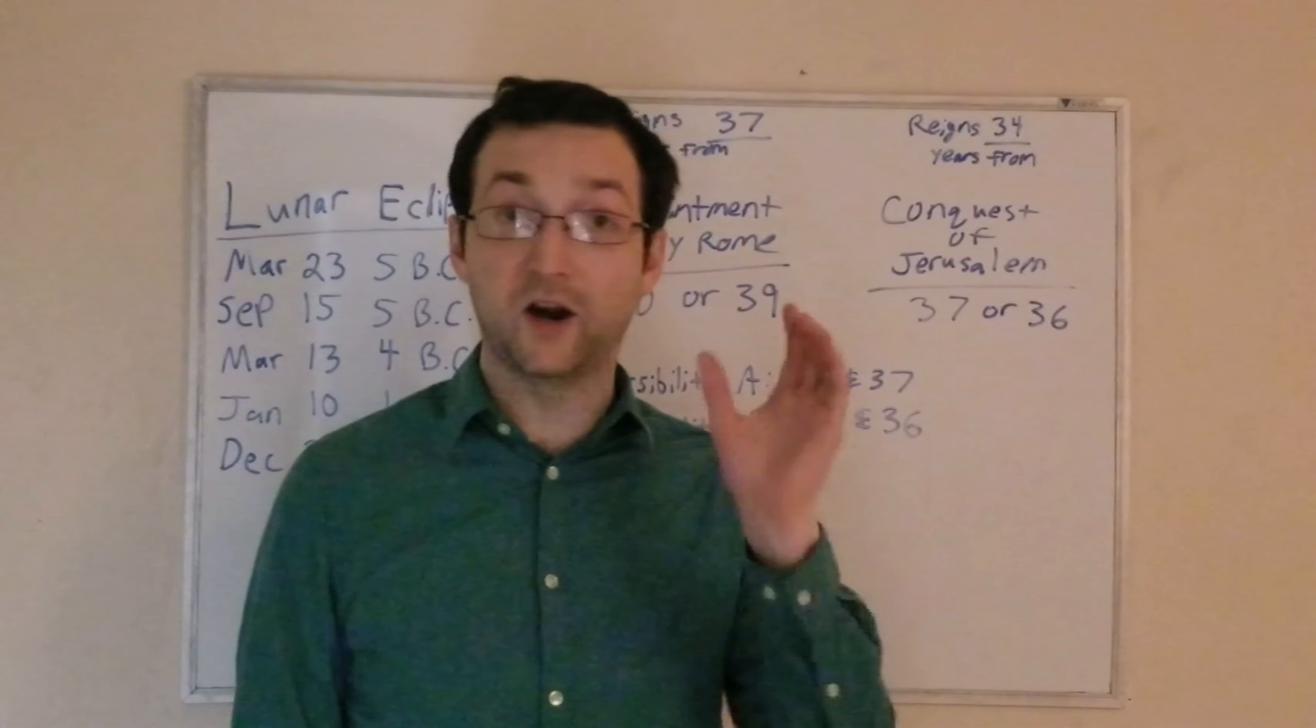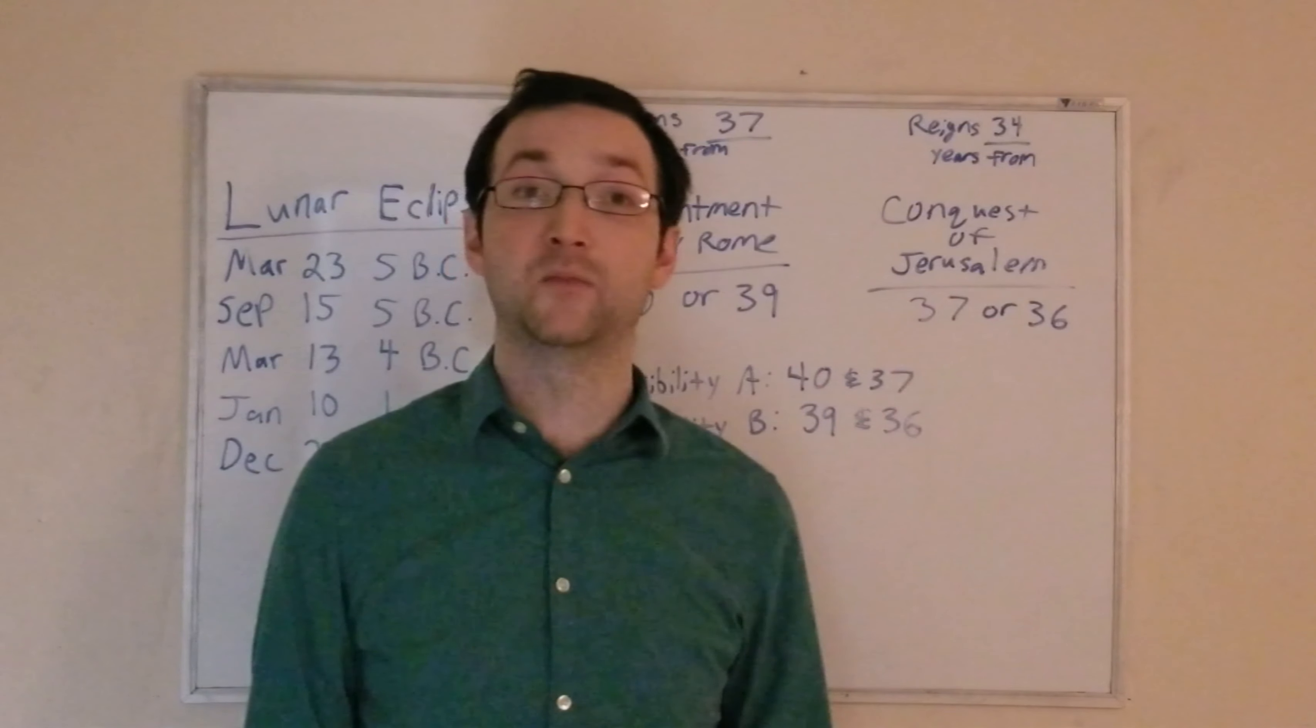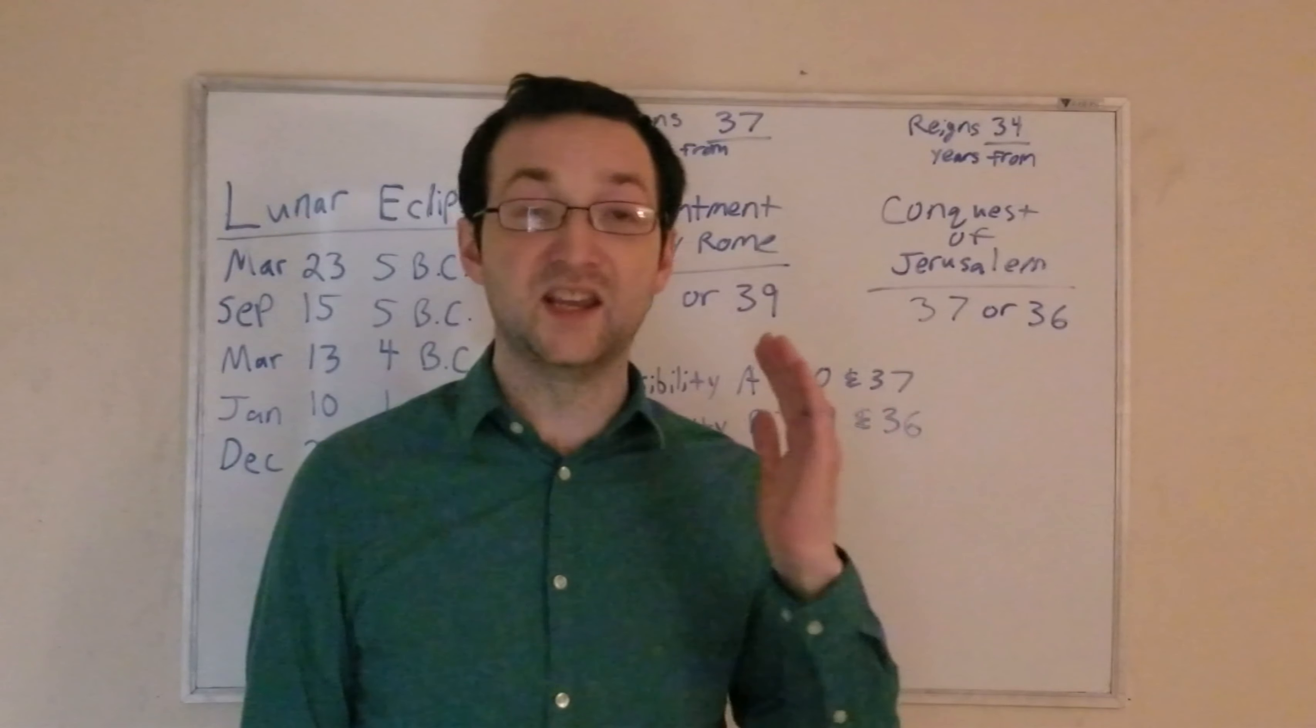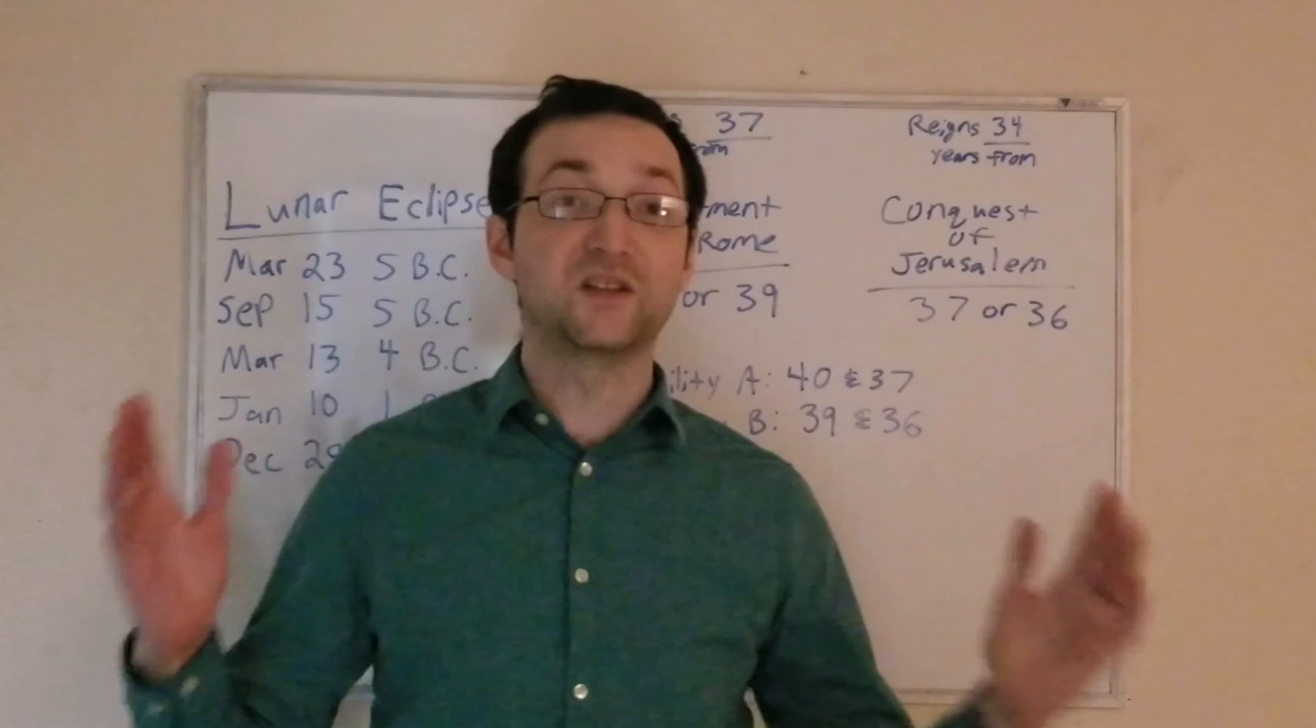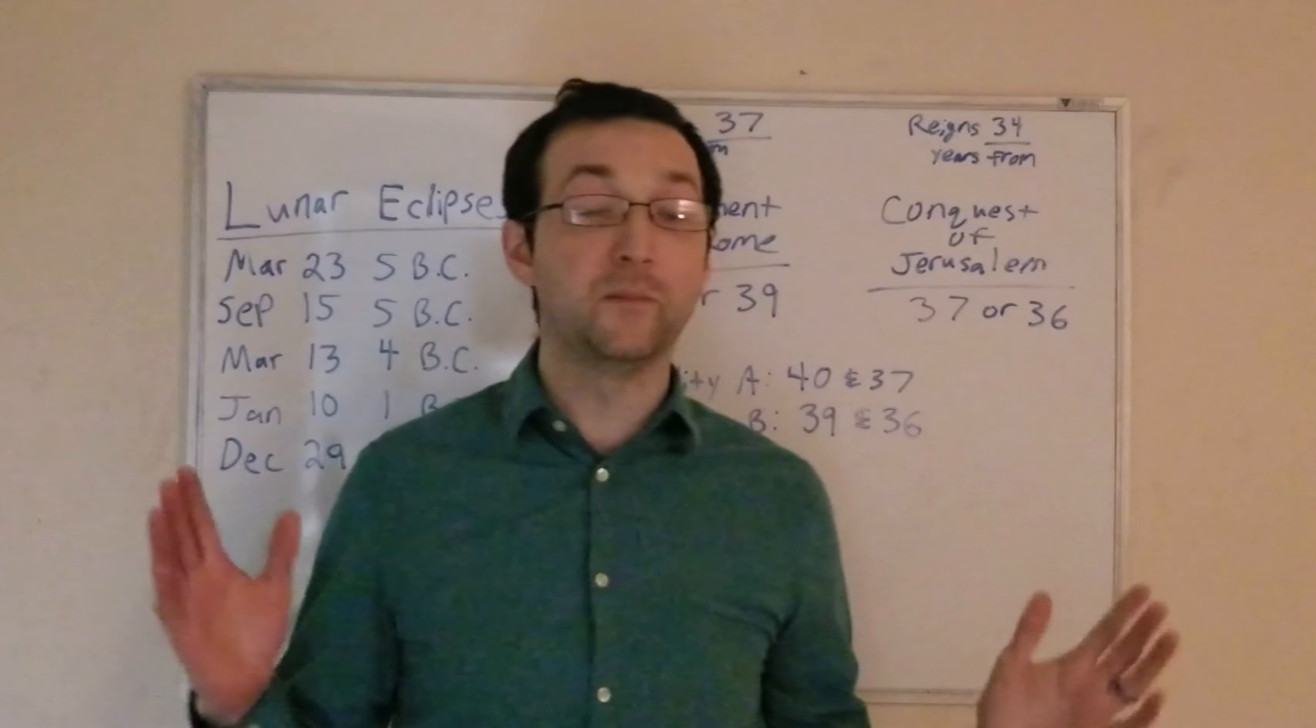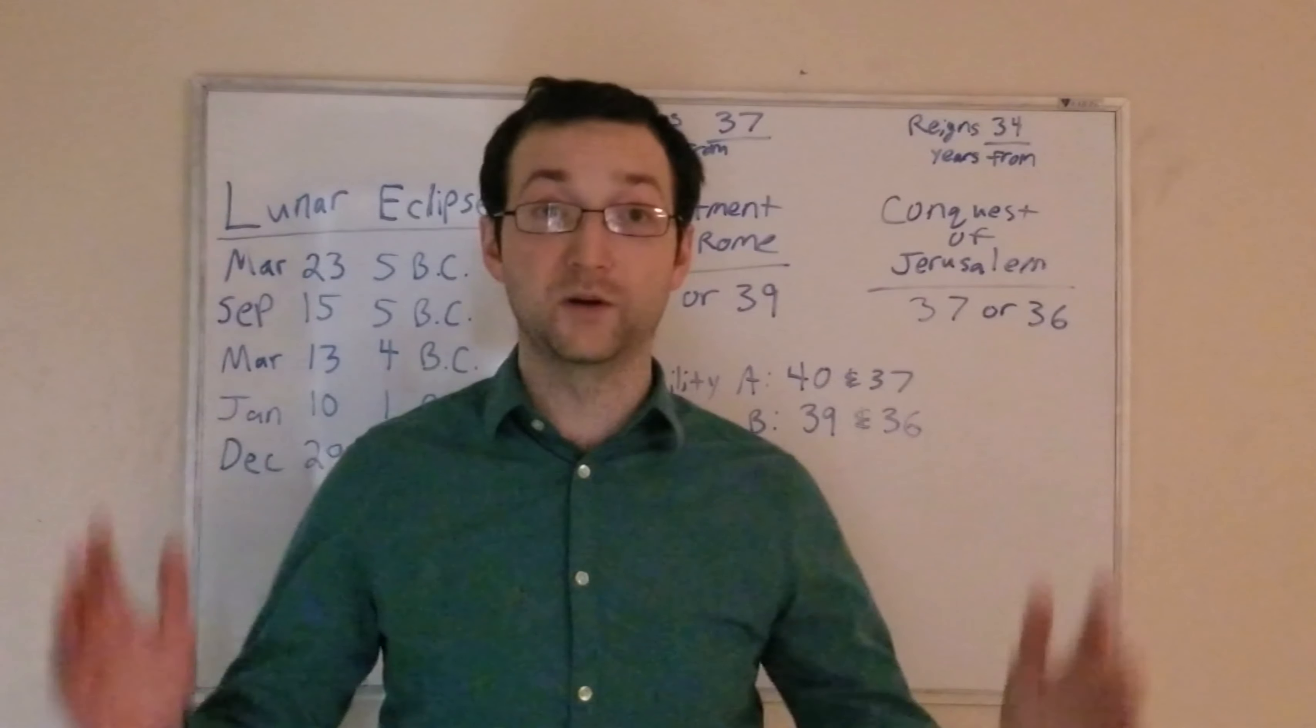So, Schur's assumptions. Herod is appointed by Rome in 40 BC. He conquers Jerusalem in 37 BC. His reign is being counted inclusively. He is in his 37th year in 4 BC. This is the eclipse that we're looking for. Herod dies in 4 BC. Schur didn't know about all five of these eclipses. He didn't have the benefit of NASA, but he did know about this eclipse, and he was able to make the data work with this one.